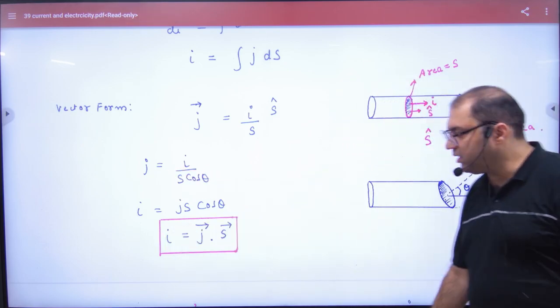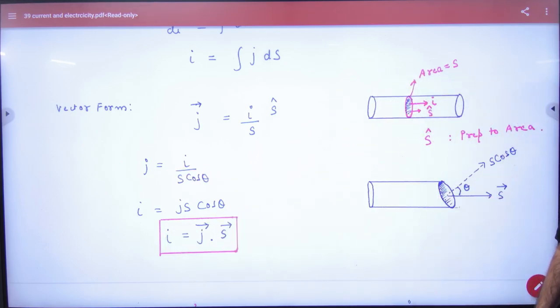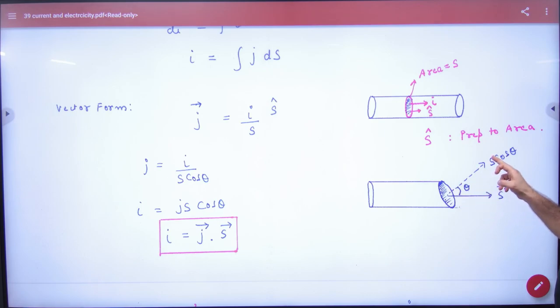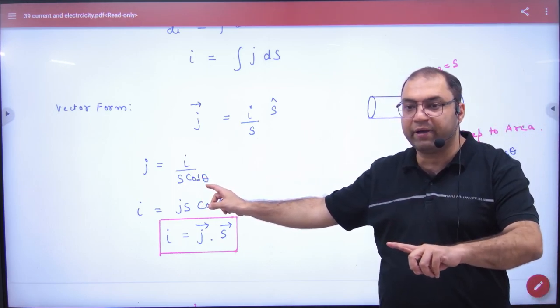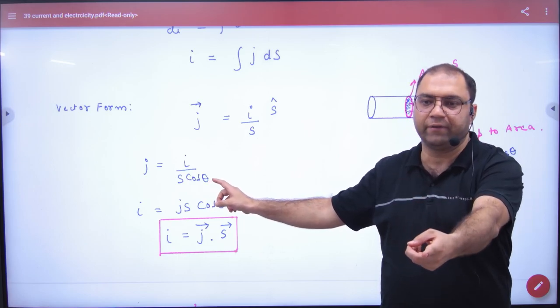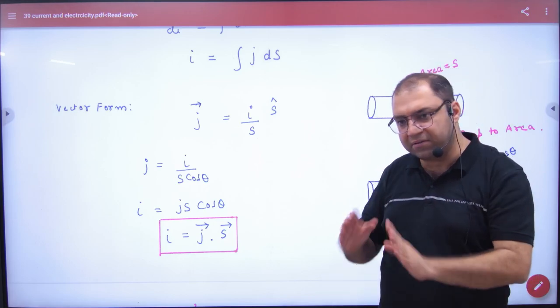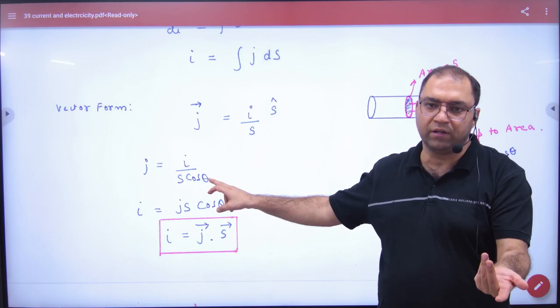To yahaan se, agar kisi ne kaha ki sir ye wire aisi hai to samajh mein aa gaya - agar wire ko kaat diya jaye kainchi se aise tedhi, to area dekho, seedha nira area tedhi ho gaya. Ab area vector ye thoda na hoga perpendicular. Phir kya karenge? Phir yeh kaha ki agar maan lo ye area vector S vector hai, aur maan lo ye S ka perpendicular hai. To S ka component banega theta ke saath S cos theta. To current density ka formula hoga I divided by nahi S - S cos theta. Agar wire tapered hai to phir aapko component lena padega area ka. Lekin agar seedhi hai to theta zero ho jayega, cos zero is one, answer sahi aa jayega.